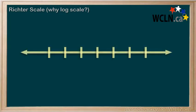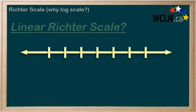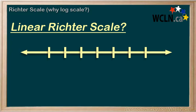The Richter scale is a scale for measuring the intensity of an earthquake, or the vibration in the Earth's crust. A linear scale for this would not work well. Let's quickly consider that.